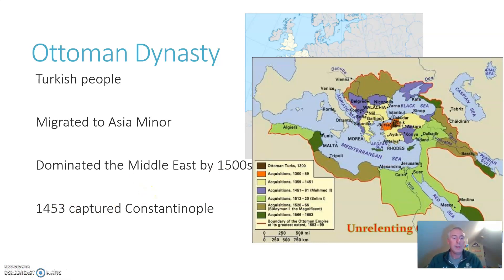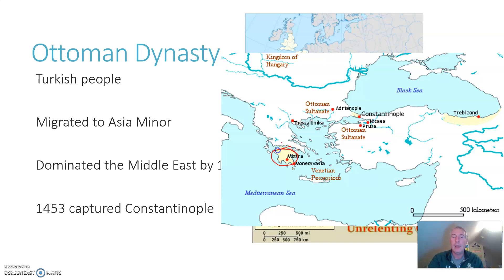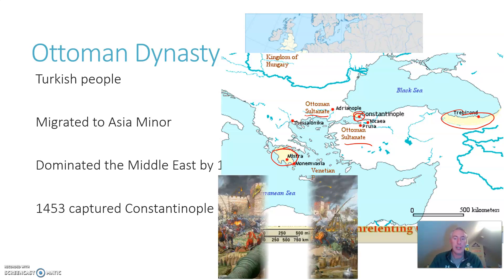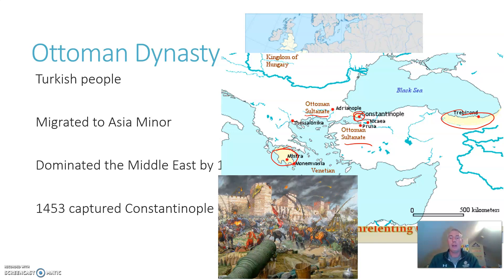Constantinople was the capital of the Byzantine Empire and had been one of the largest and most successful cities in the world since Roman times. By 1453, though, the Byzantine Empire was down to practically nothing — a tiny little bottom tip of Greece, a little area in Asia Minor, and then just Constantinople; that was it. Everything else was Ottoman Sultanate. By the mid-1400s, the Ottomans had taken over pretty much the entire territory surrounding Constantinople. In 1453, Sultan Mehmet II marched his armies to the walls of the city and, using new cannon technology, laid siege to the city for 54 days. He had the largest cannon in the world at that point built and pummeled the city for almost two months. It eventually did fall, and the Turks renamed it Istanbul, which is still its name to this day.